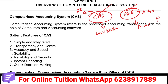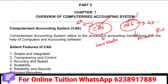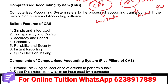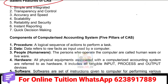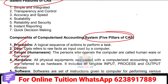We will start learning about Computerized Accounting in the first chapter. We will learn about the features of Computerized Accounting. We will learn about the 5 pillars of Procedure Data, People, Hardware and Software.